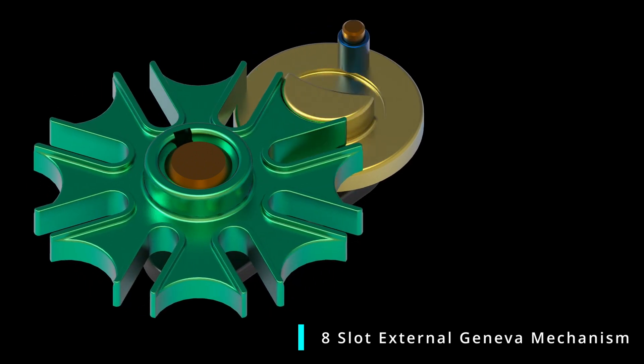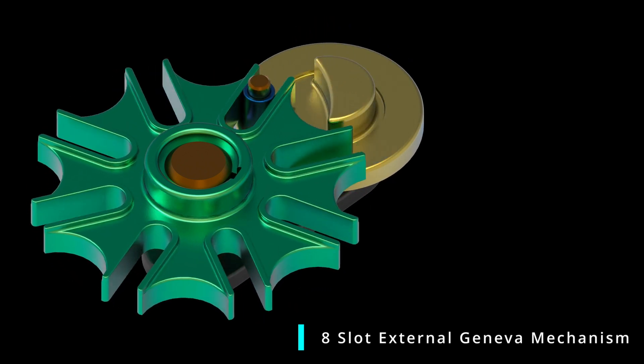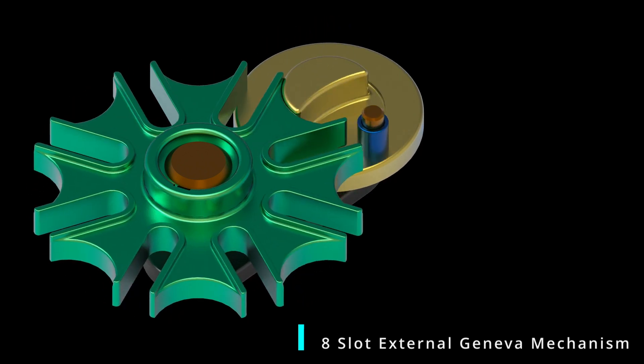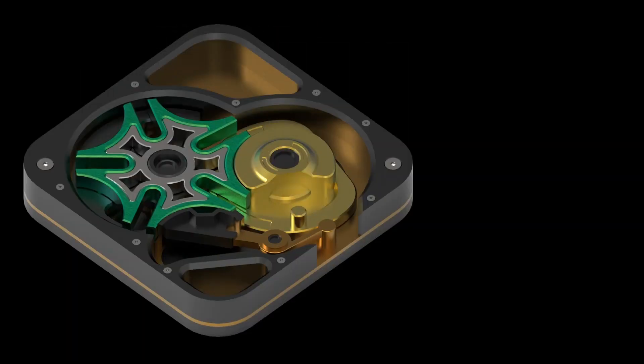The most common use of the Geneva mechanism is in the creation of intermittent rotary motion. This means that the mechanism stops and starts as it rotates, rather than moving continuously.